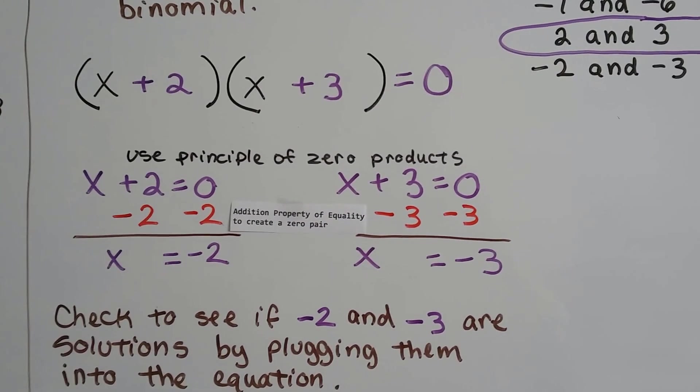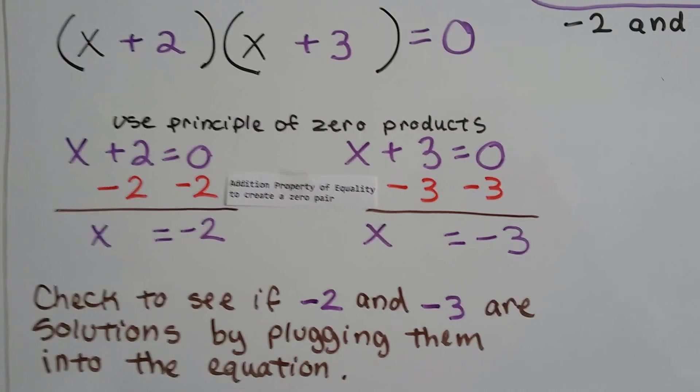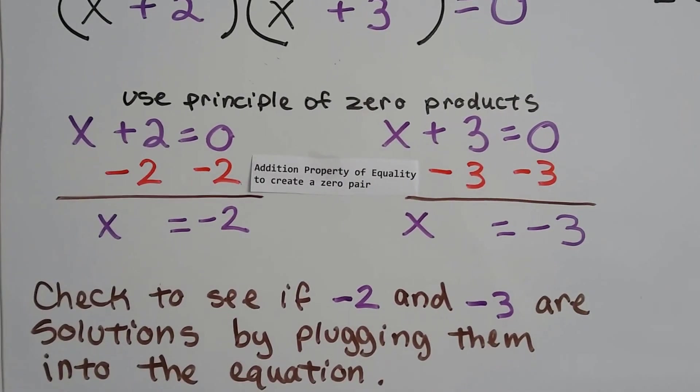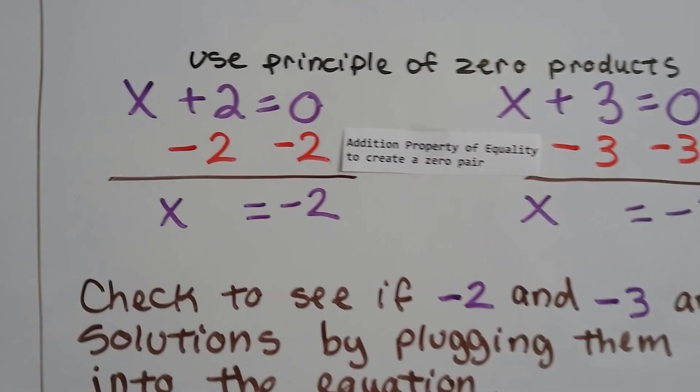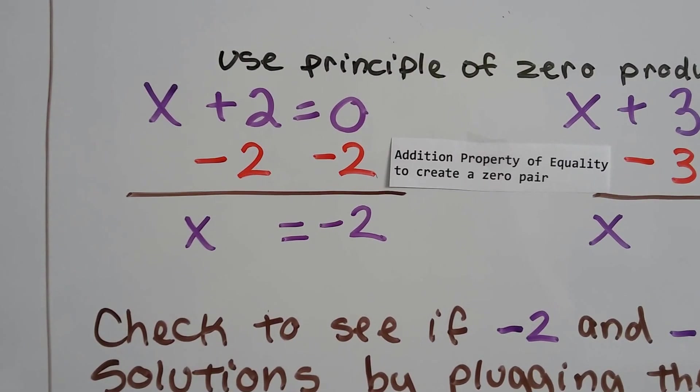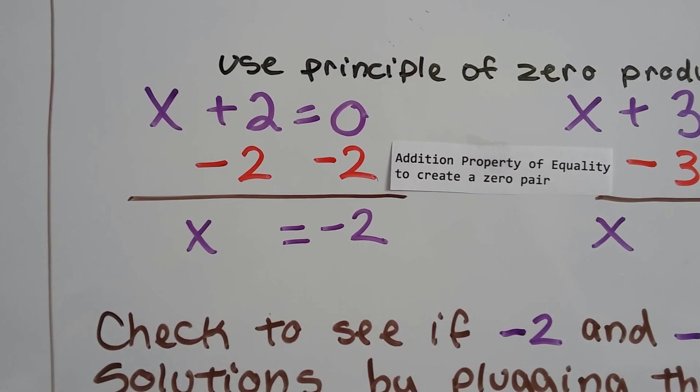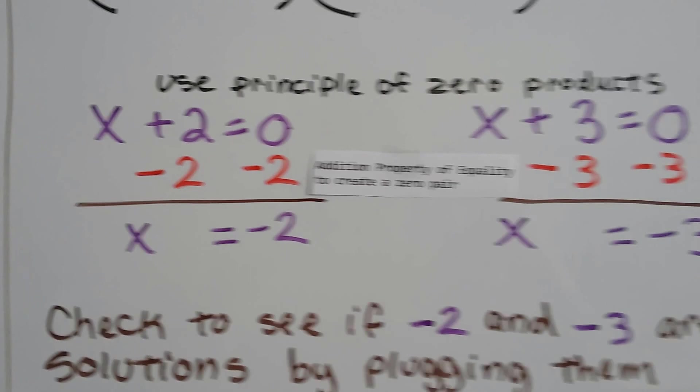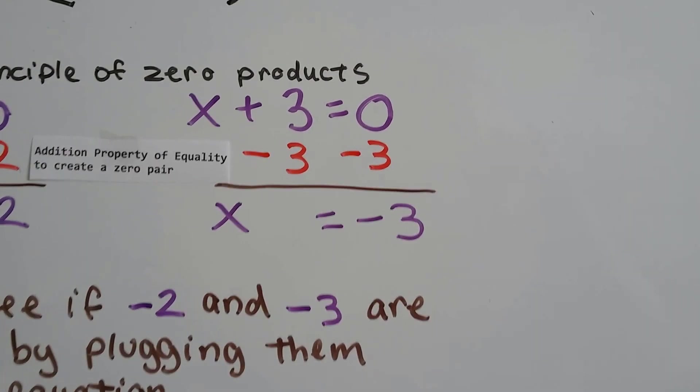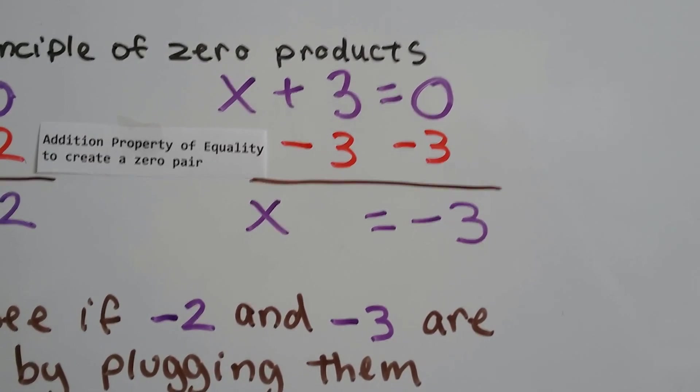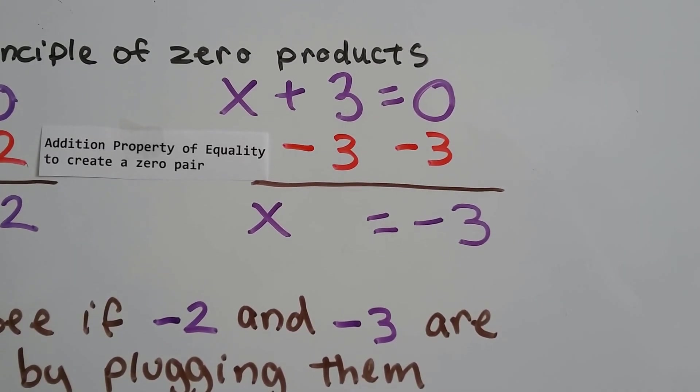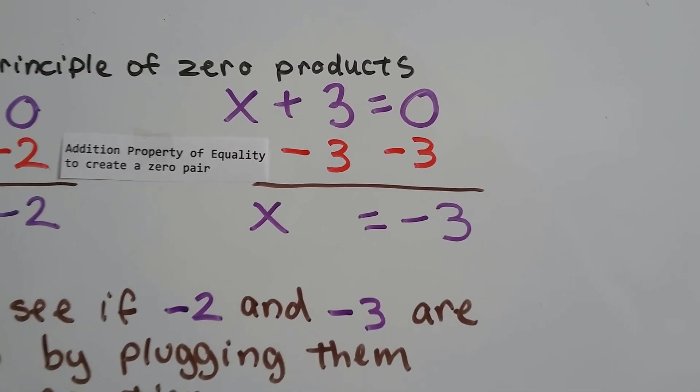To get the x by itself, we use addition property of equality to create zero pairs. And we take away 2 from this side and from the other side of the equal sign, and we get x equals negative 2. We do the same thing over here. We take away a 3 from each side of the equal sign and cancel out that plus 3, and we get x equals negative 3.